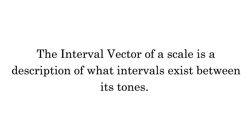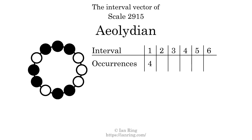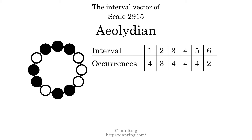The interval vector of a scale is a description of what intervals exist between its tones. There are 4 intervals with the size of 1 semitone, 3 intervals with the size of 2 semitones, 4 intervals with the size of 3 semitones, 4 intervals with the size of 4 semitones, 4 intervals with the size of 5 semitones, and 2 intervals with a size of 6 semitones. Each interval does not appear in this scale a unique number of times, so this is not a deep scale.